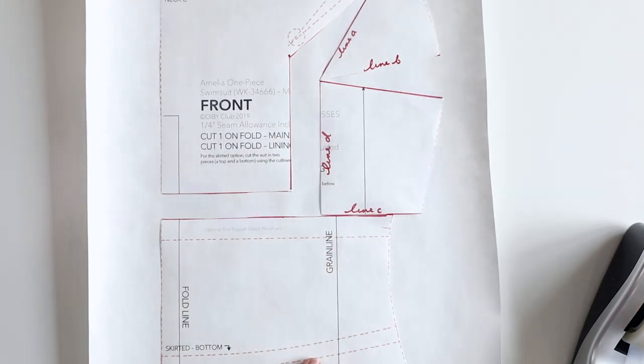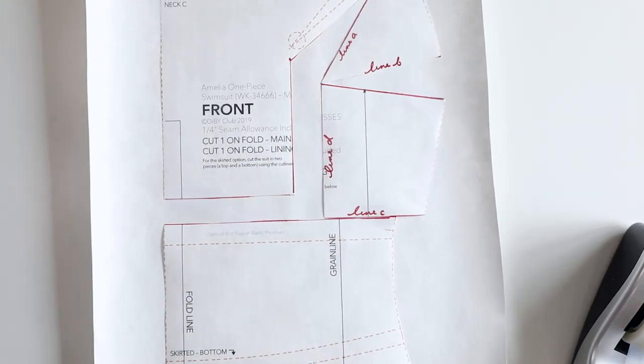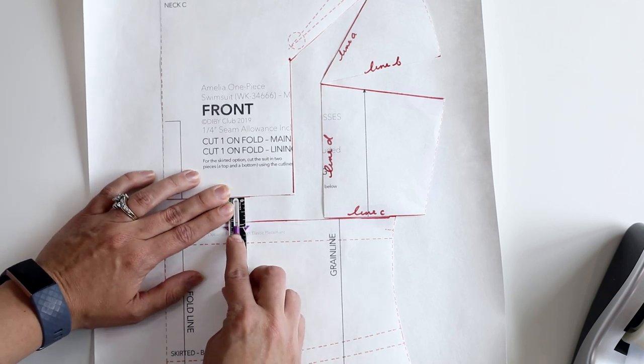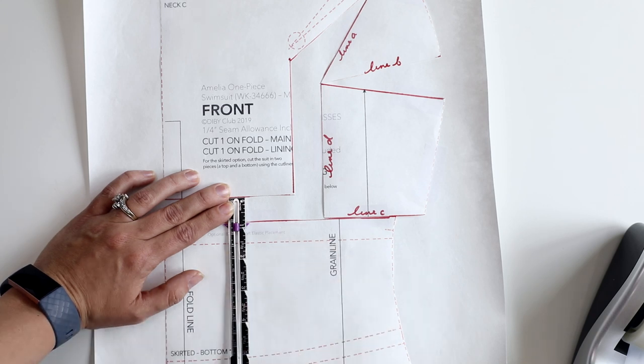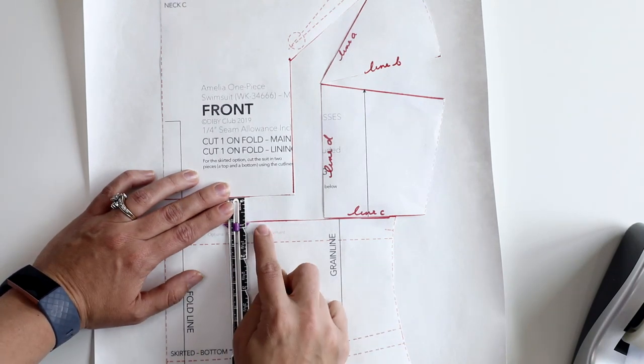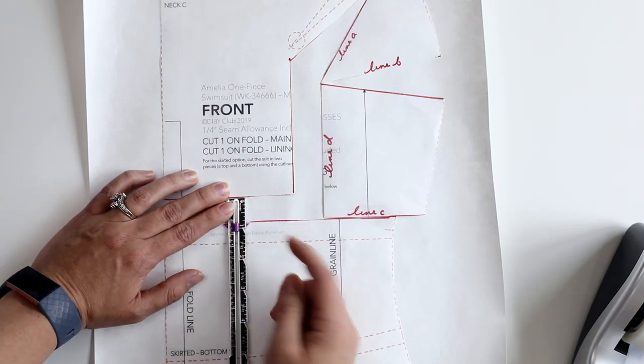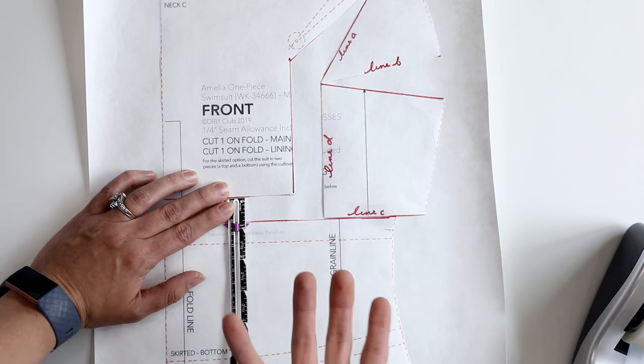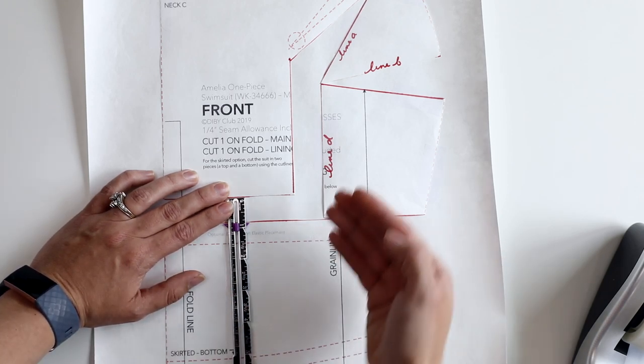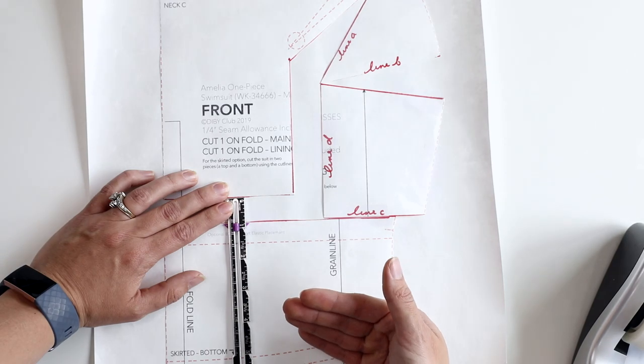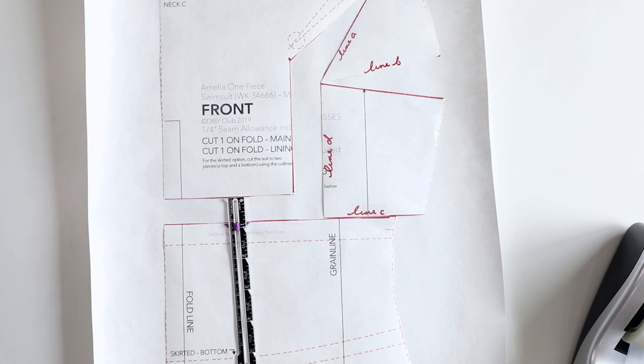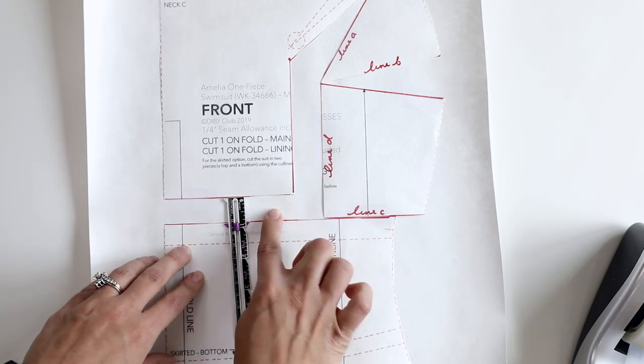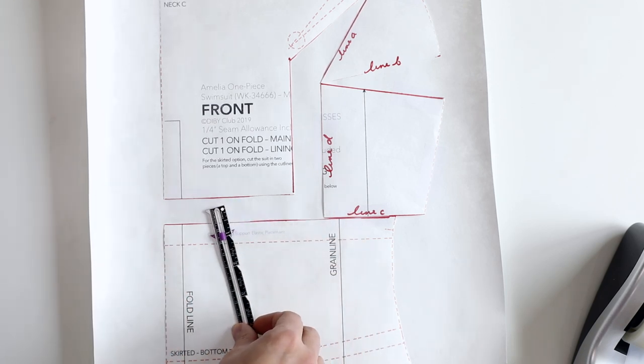Before you go any further, take a second and measure how much length you are adding with this FBA. You are going to want to know this measurement for the future when you are ready to height adjust this. Because you will have already added in this extra length. So when you go to the height adjusting section. If you add in more length without taking this into account then it will be too long.